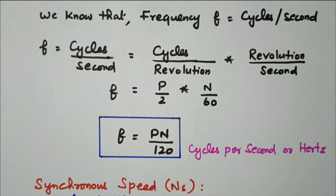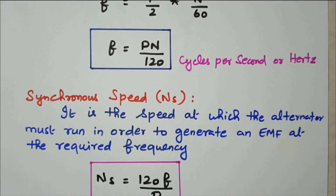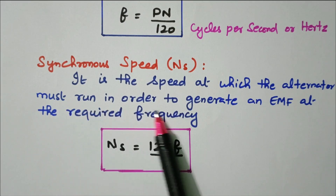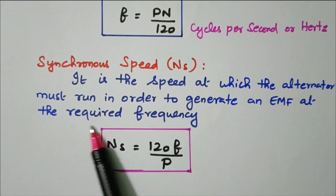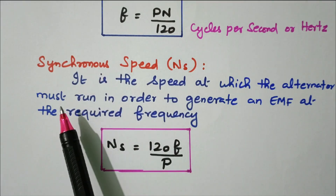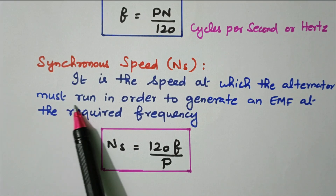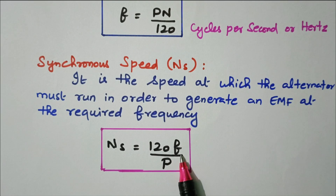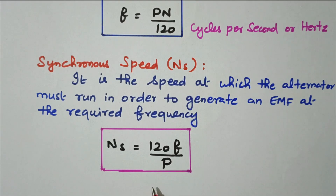Synchronous speed is the speed at which the alternator must run in order to generate an EMF at the required frequency. Since it always rotates at a constant speed, from f = PN/120 we get N = 120f/P. This is the synchronous speed formula; the number of poles is fixed during construction, so the machine runs at this constant speed.